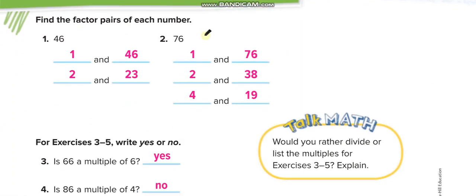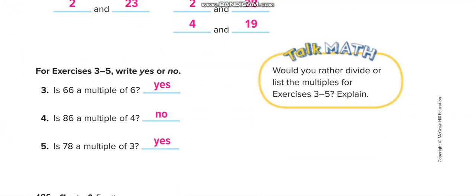The factor pairs of 46 are 1 and 46, and 2 and 23. For 76 they are 1 and 76, 2 and 38, and 4 and 19. Is 66 a multiple of 6? Yes — divide 66 by 6, 6 times 11 is 66, no remainder. For 86 divided by 4 and 78 divided by 3, if you find a remainder it means no, but here you don't find a remainder, so it's yes.